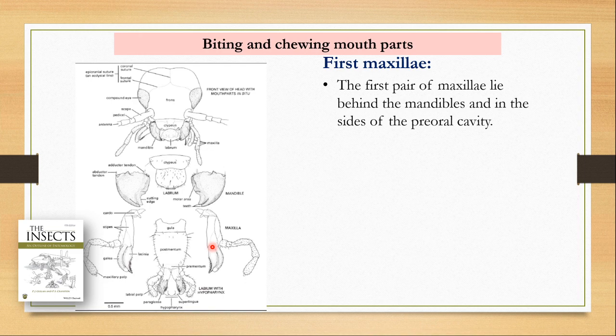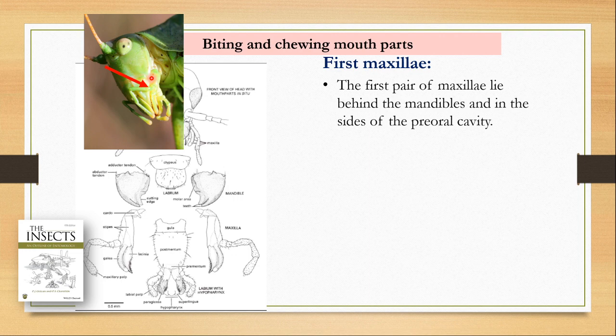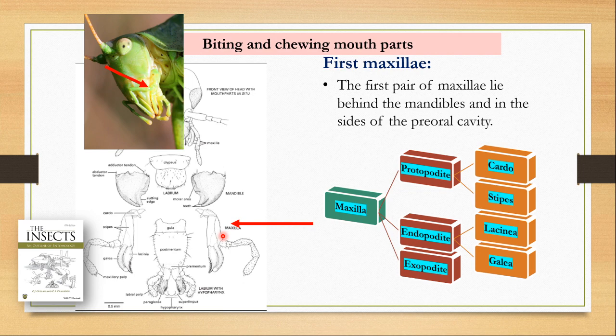The pair of maxillae that lie behind the mandibles are known as the first maxillae and they form the sides of the pre-oral cavity. Here in this grasshopper you can see the first maxillae very clearly. A maxilla is divided into three parts: the protopodite, the endopodite, and the exopodite. The protopodite is further divided into the cardo and the stipes. The endopodite has a jaw-like structure known as lacinia and a hood-like lobe known as galea.